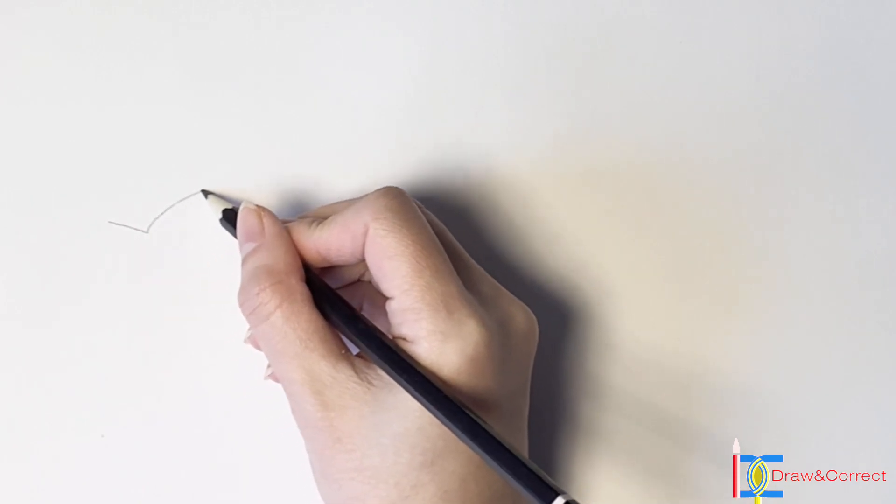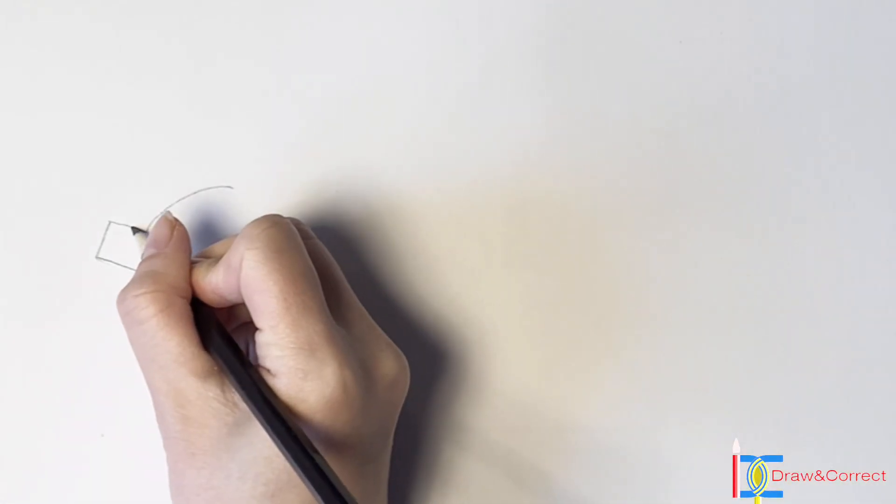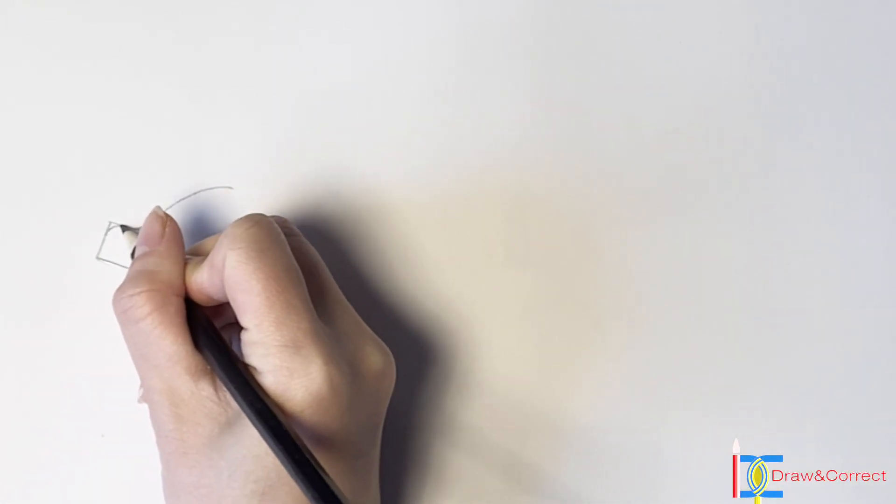First I draw two lines for the mouth, a quarter circle, make a little curve.